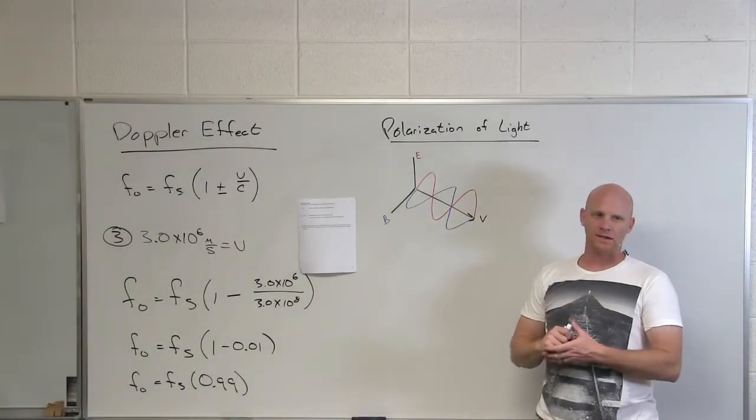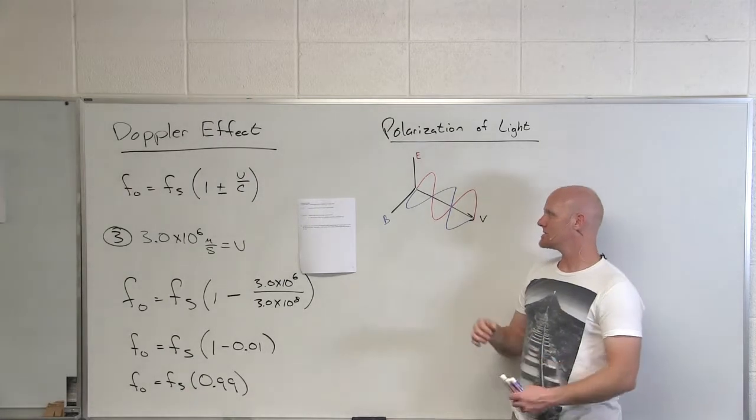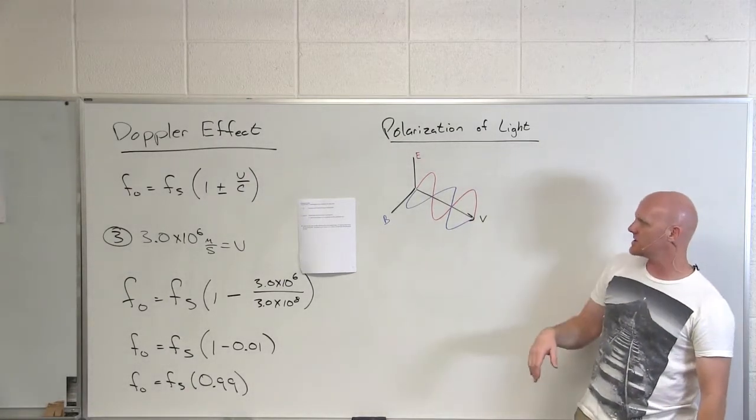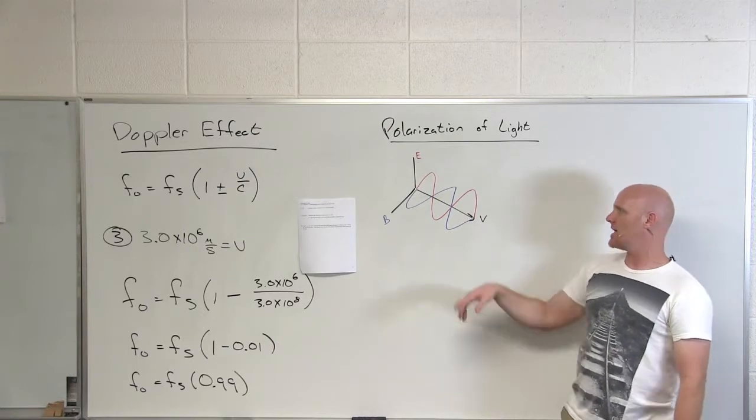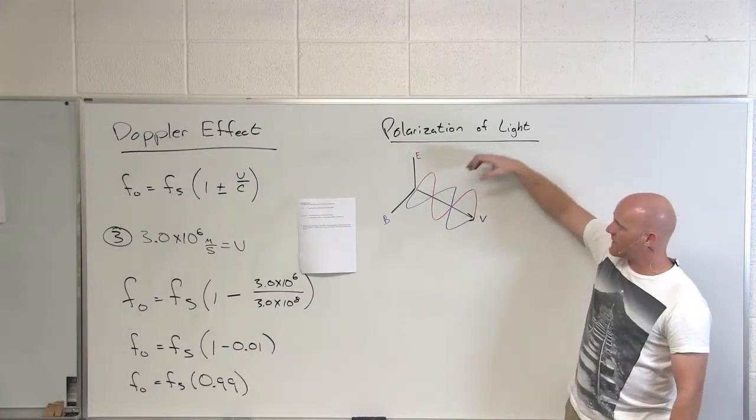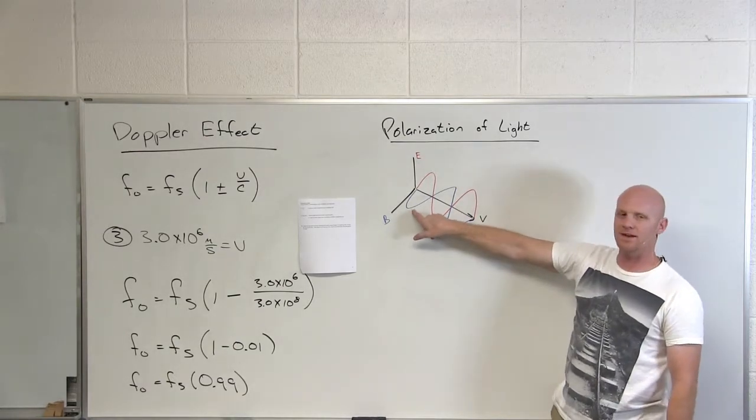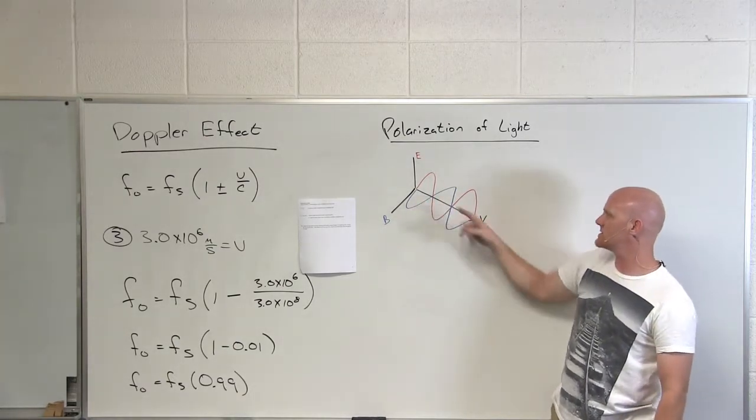Okay, the last topic to talk about with light for tonight is the polarization of light. So go back to our drawing with electromagnetic radiation here. As you recall, in an electromagnetic wave we've got the electric field in one plane, perpendicular to that is the magnetic field, and perpendicular to both of these is the velocity.